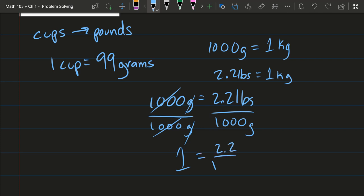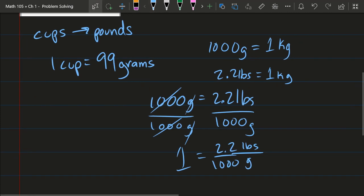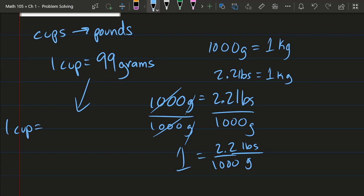So we have 2.2 over 1,000, and we have pounds per gram. I'm going to use G for grams here. So now we can bring this down. 1 cup equals 99 grams. Now I'm going to multiply by 1, which doesn't change anything.